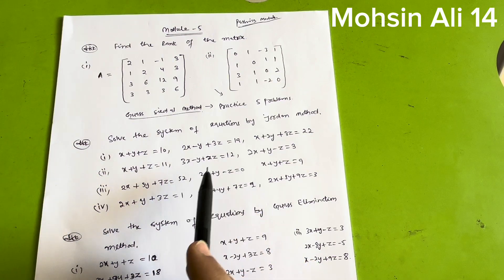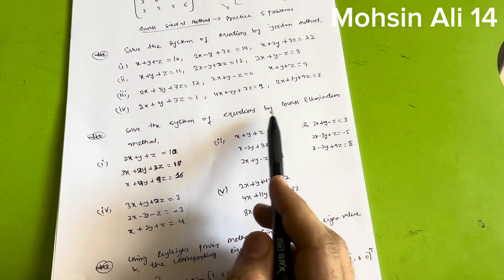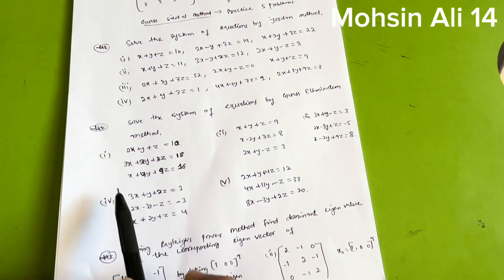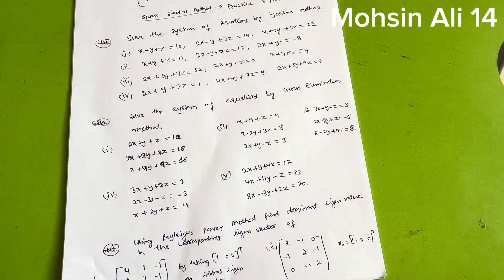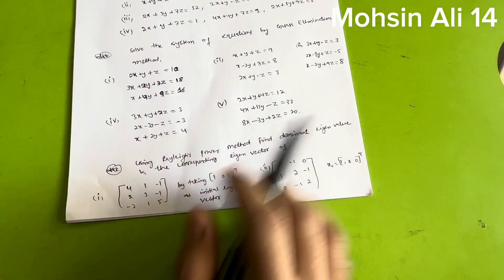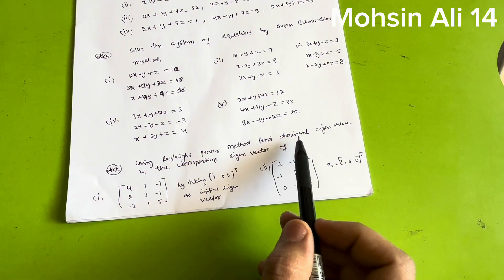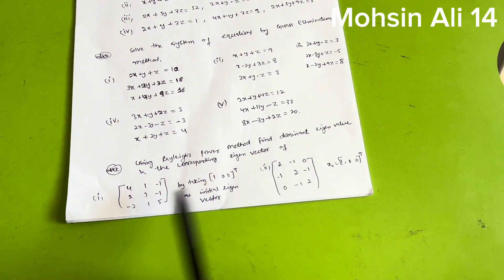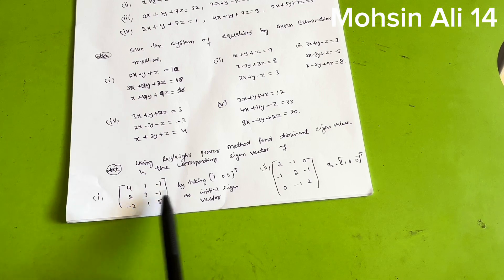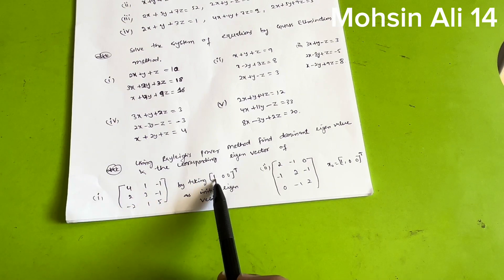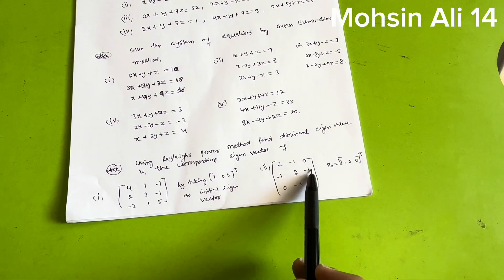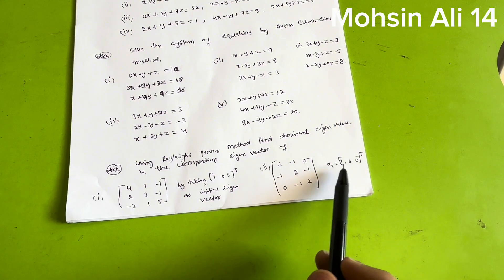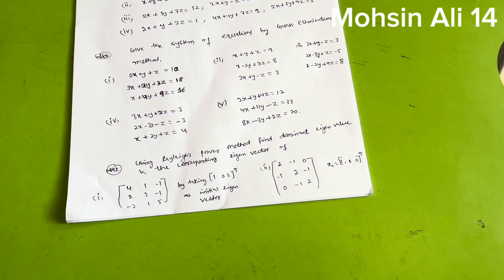Next, solve the system of equations by Gauss elimination method — I have taken five sets of equations here, so pause the video to note them down. Then, using Rayleigh's power method, find the dominant eigenvalue and corresponding eigenvector of the matrix [4, 1, −1; 2, 3, −1; −2, 1, 5] with initial eigenvector [1, 0, 0]ᵀ, and of [2, −1, 0; −1, 2, −1; 0, −1, 2] with initial vector [1, 0, 0]ᵀ.